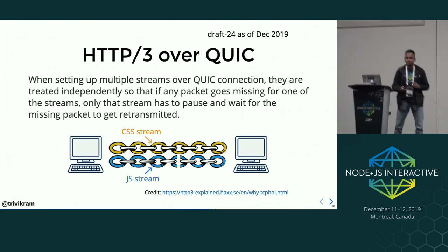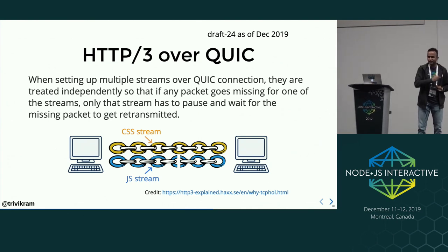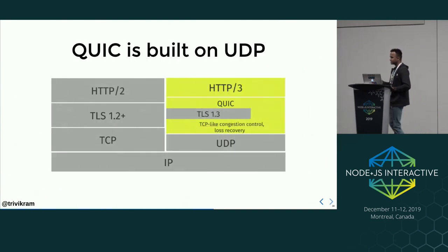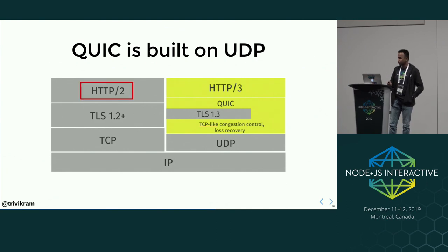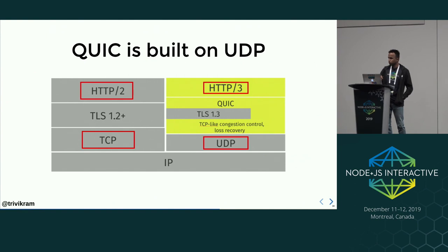You might ask: isn't this what HTTP/1 was doing — are we going back? No, because HTTP/3 is built on top of UDP. On the left side you can see HTTP/2, which is built on top of TCP, and HTTP/3 is built on top of UDP with QUIC coming in between.